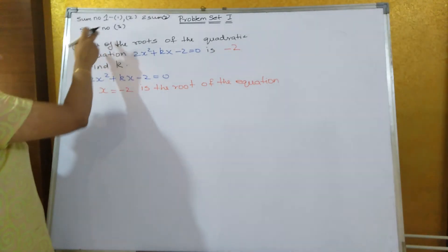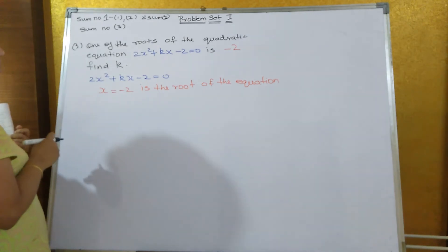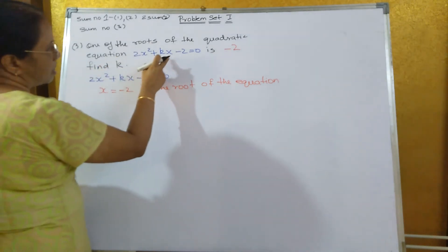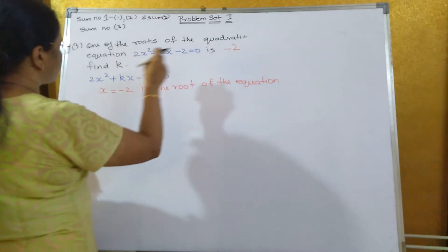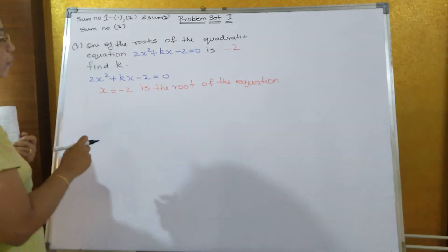Now, problem set 1, number 3. One of the roots of the quadratic equation 2x² + kx - 2 = 0 is minus 2. We have to find out the value of k.